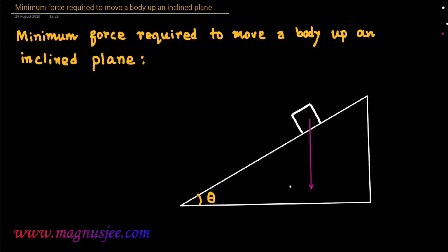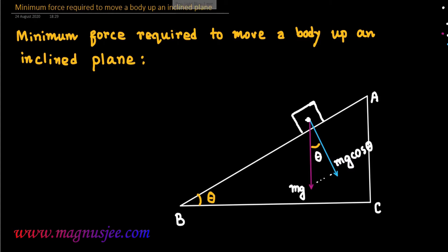The weight mg acts vertically downwards and is resolved into two rectangular components. One component is mg cos theta, and the other component is mg sin theta. We can draw a perfect rectangle for the resolution of the weight mg.